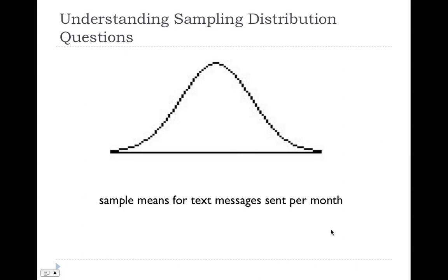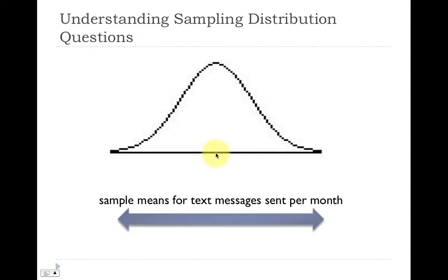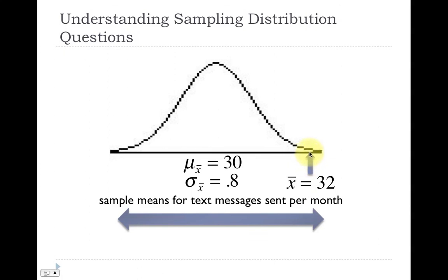Before we go to the calculator, let's demonstrate with a visual. We have the bell curve — the sampling distribution is based on the bell curve. The horizontal axis represents sample means for text messages sent per month, which is why this problem is different from the last one. In the last problem, the horizontal axis represented the number of text messages; here it represents the sample mean for text messages. In the center, we have the mean and standard error of the sampling distribution. The value 32 is a sample mean — the problem asks for a sample mean greater than 32, represented as x-bar.